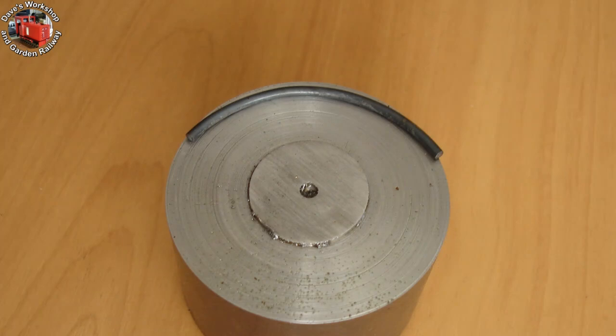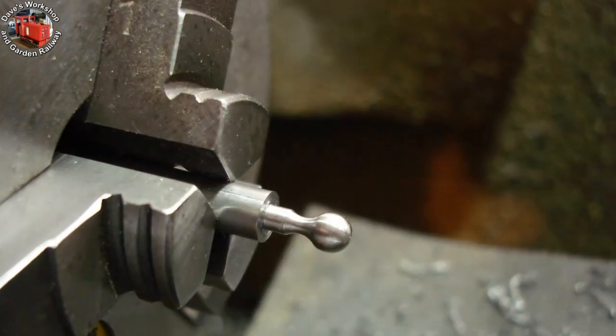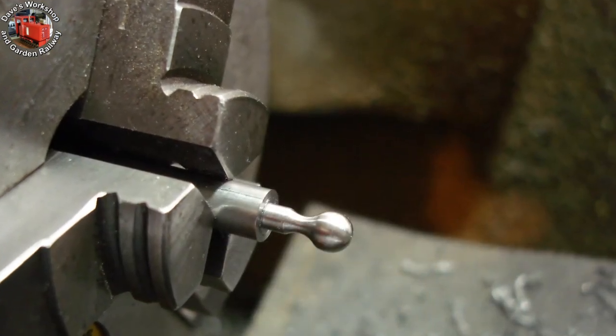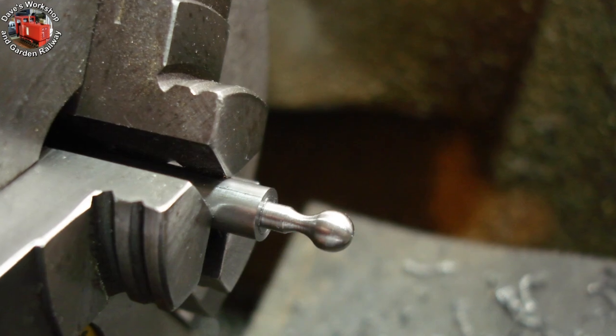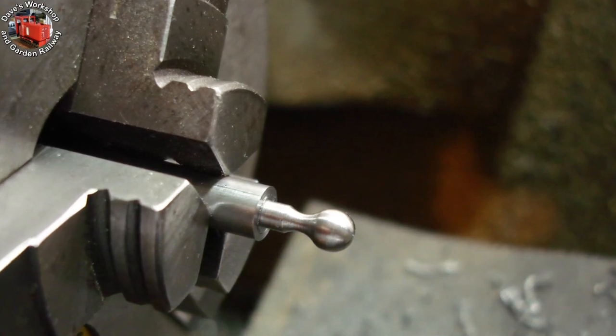Starting on the smoke box handrail, I used the 60mm steel billet as a bending former for the 3/32nd steel rod. A handrail stanchion, well progressed. The ball end is 3/16ths diameter, and the base diameter is 1/8th.